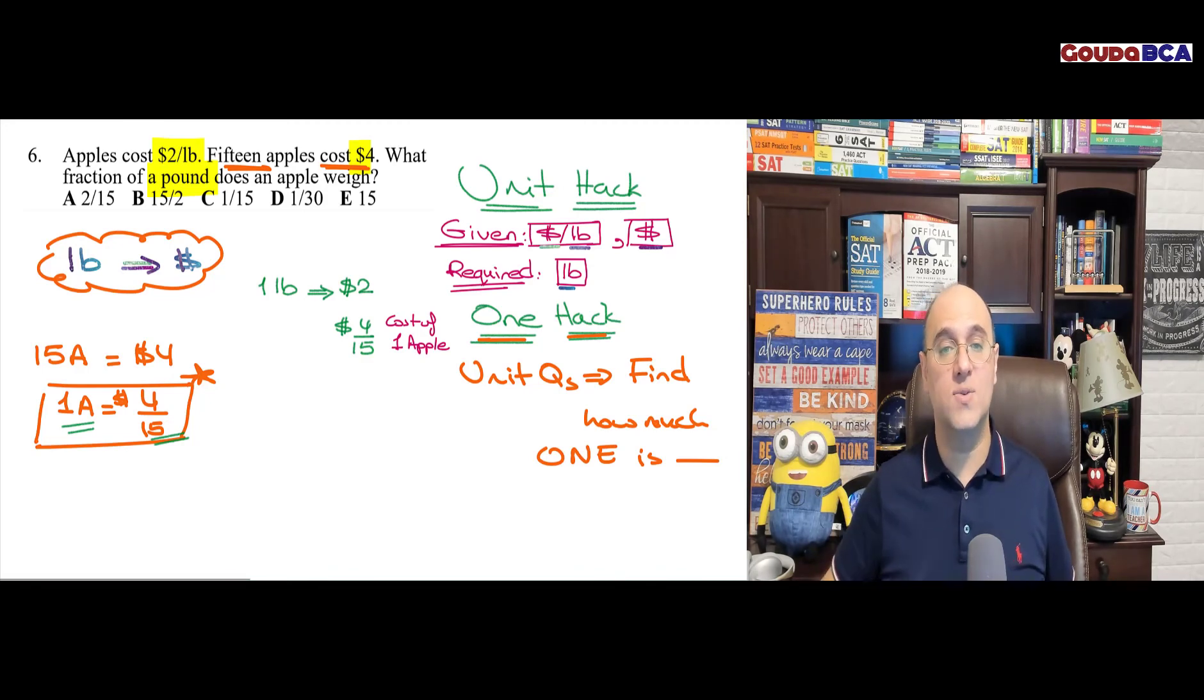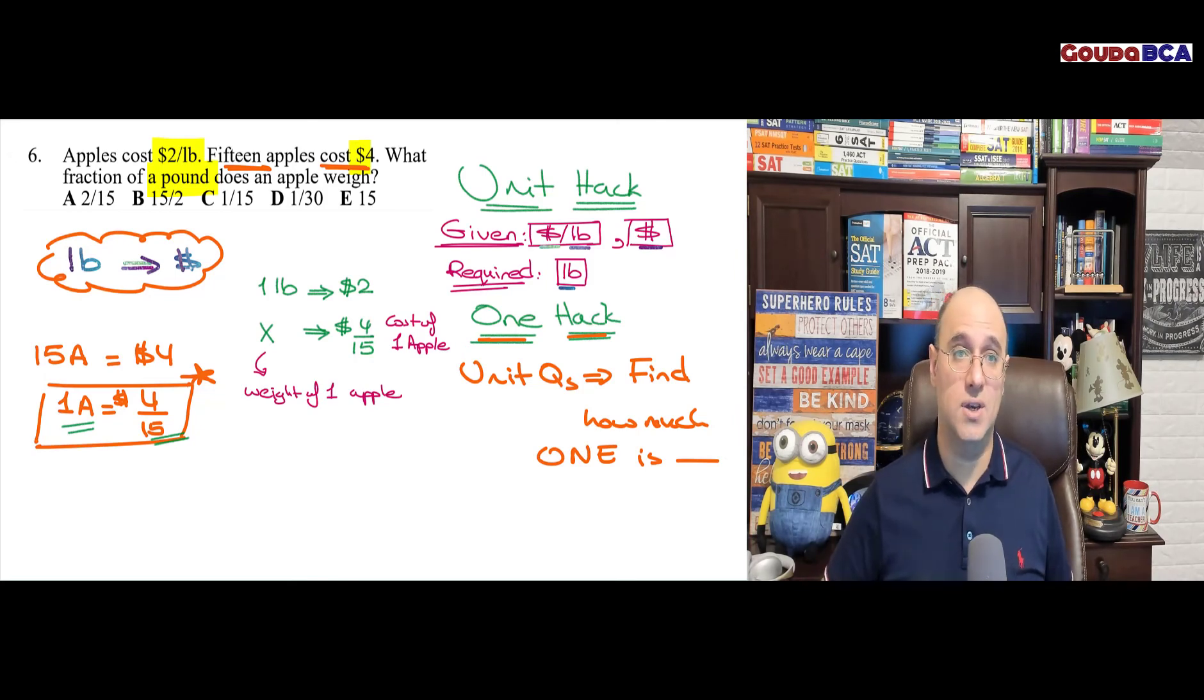Now, what is missing here? We're going to call this x. What is x? x is pounds because it's under pounds. So it's how much one apple weighs. Weight of one apple.